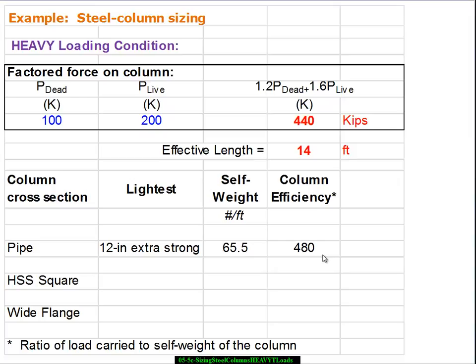And that's the ratio that we're coming up with. So now we're going to go look for an HSS square column. And again we're 14 feet to support 440 kips.